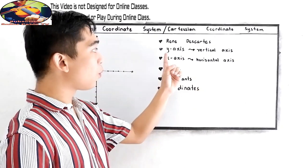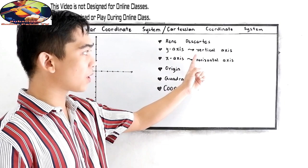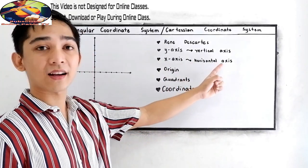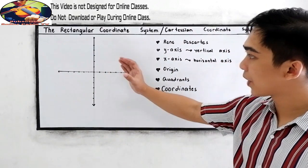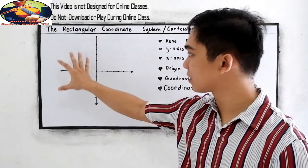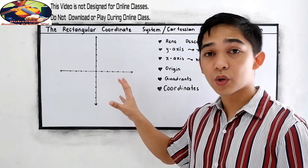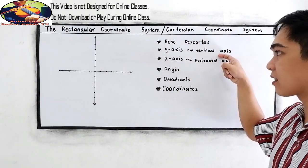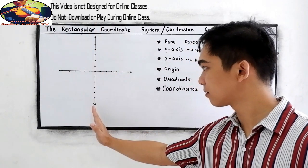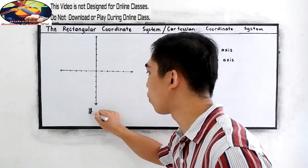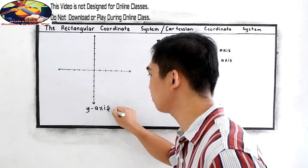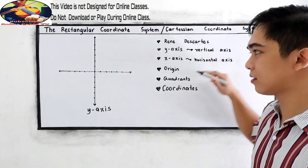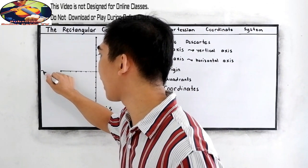You will also encounter the Y-axis. The Y-axis is our vertical axis in our Rectangular Coordinate System. The X-axis is the horizontal axis. Let us locate the Y-axis and the X-axis. We know that the Y-axis is the vertical axis — this is our vertical axis. And we have the X-axis, the horizontal axis — this is our X-axis.